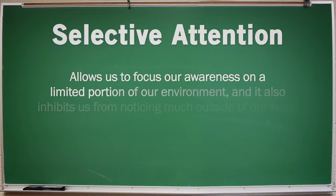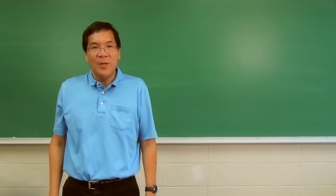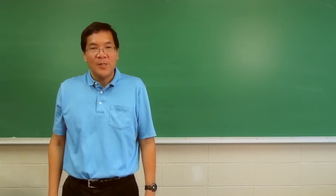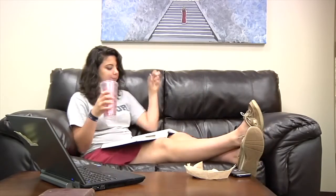Selective attention allows us to focus our awareness on a small portion of our environment. It also blocks us from noticing much outside of our focus, preventing us from being distracted and overwhelmed by irrelevant information. The problem is when there are too many things competing for our attention, especially when the things we're not supposed to be paying attention to are more interesting. I'm talking, of course, of multitasking. The human cognitive system is simply not built to multitask, especially in education where what we're supposed to be paying attention to is likely unfamiliar and difficult to understand.